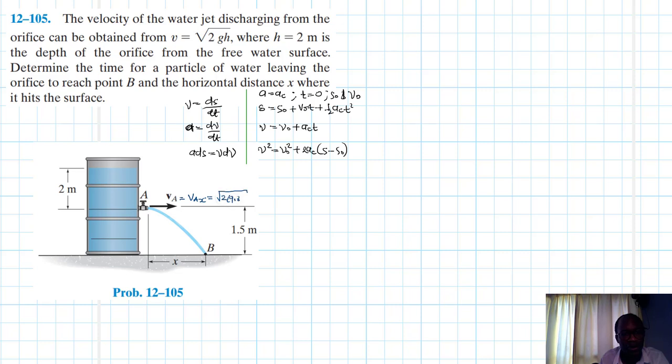We're just going to call as our vax is equal to root of 2 times root of 2 times 9.81 times 2, and this one is just going to be equal to, we factor out, it just becomes 4 times 9.81.